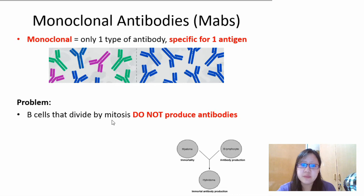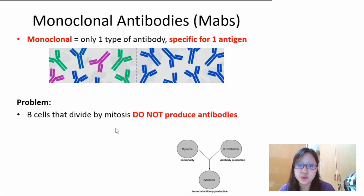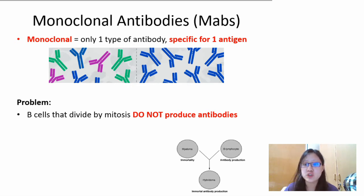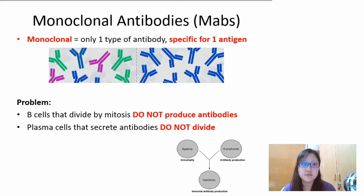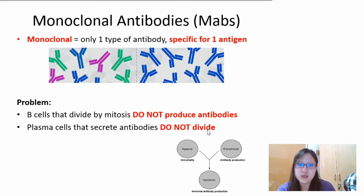B-cells that divide by mitosis — if you isolate them — do not produce antibodies. These are activated B-cells that have not differentiated into plasma cells; they can divide by mitosis but they do not produce antibodies. However, if you take the plasma cells that have been differentiated, they can secrete antibodies but they do not divide by mitosis. So it's very hard to get a large amount of one single type of antibody, because it doesn't divide in a lab.